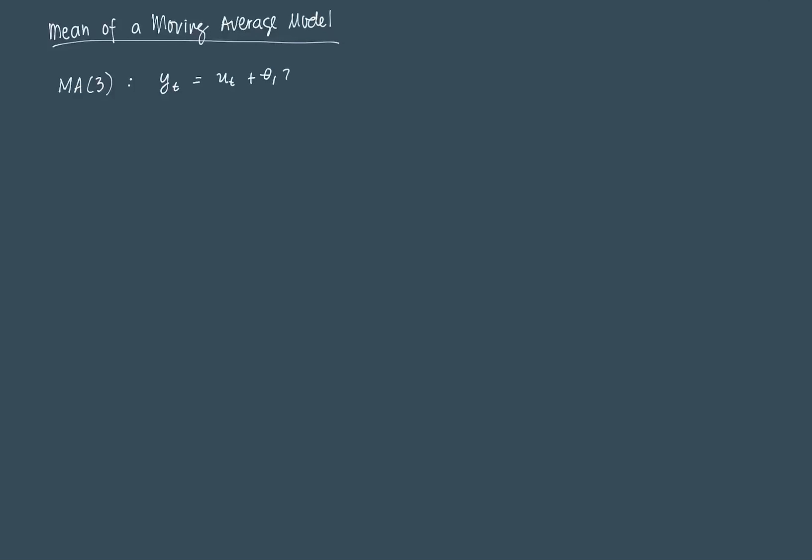As we said in the last video, 3 represents the Qth lag or the maximum lag that we're going to use for this model. So this MA3 model looks something like this: Yt is equal to Ut plus Theta1 Ut-1 plus Theta2 Ut-2 plus Theta3 Ut-3. For simplicity, we'll first assume that the model intercept is equal to 0, so that mu term is just equal to 0 for now.